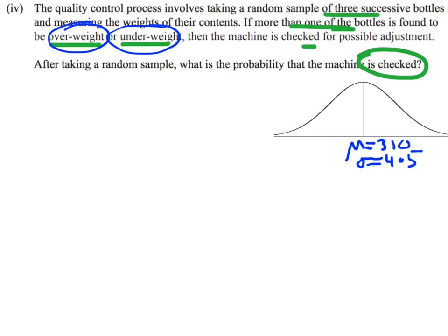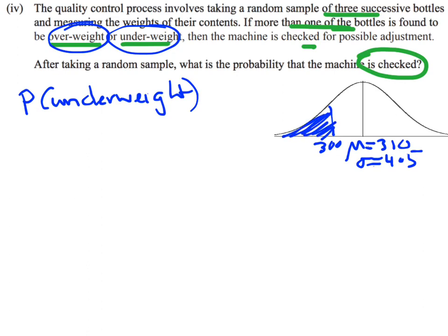We can look at the probability of a bottle being underweight. We found that in a previous question — bottles weighing less than 300 grams were considered underweight. In part 2, we found that probability was 1.3%, or 0.013.